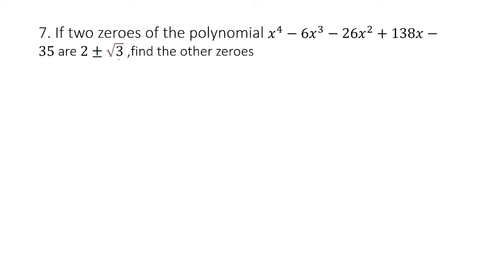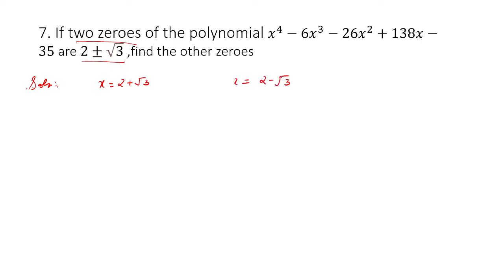They have given us 2 zeros. The 2 zeros given are 2 plus or minus root 3, meaning x equals 2 plus root 3, and x equals 2 minus root 3. These are the 2 zeros.